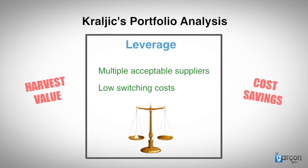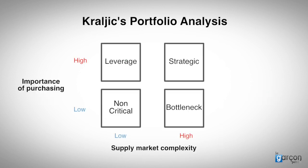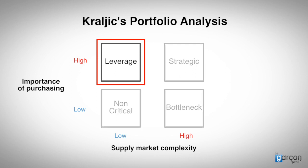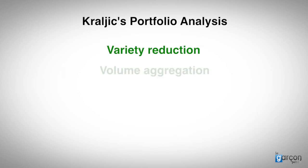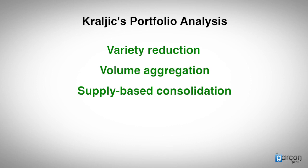In this case, value equates primarily to cost savings. Yes, I know, price and value are two different things. But when buyers have savings targets, the leverage quadrant is where most of the savings are going to come from. So strategy five is the go-to-market strategy of online auctions, RFPs, and bid and negotiate. Variety reduction, volume aggregation, and supply-based consolidation are the tactics that help harvest value.